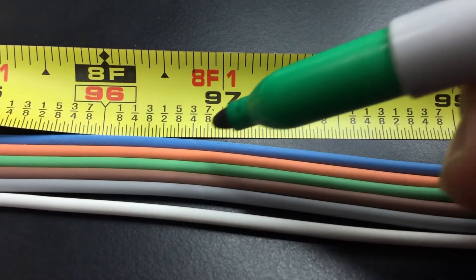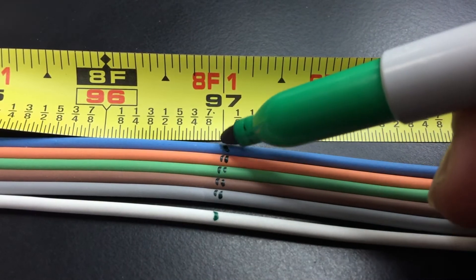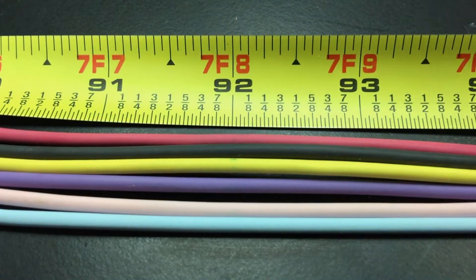Measure and mark buffer tubes 1 through 6, blue to white, 97 inches from the cable breakout.